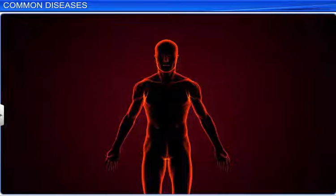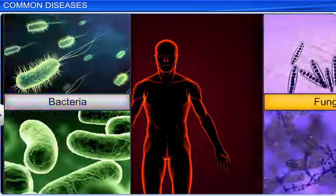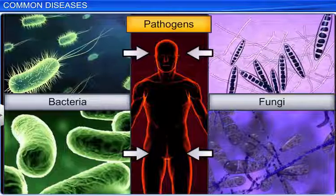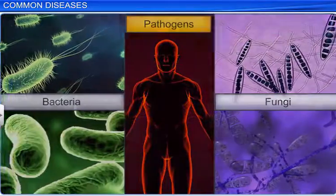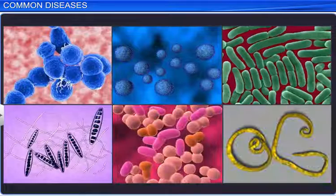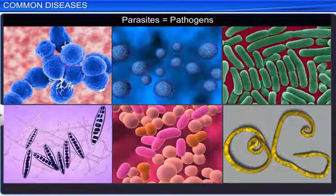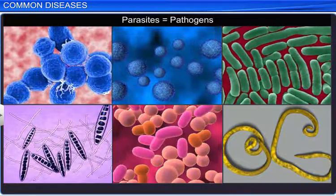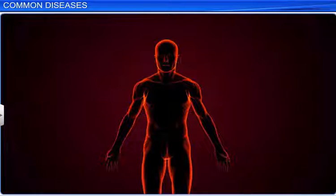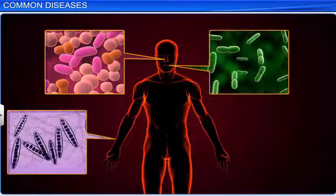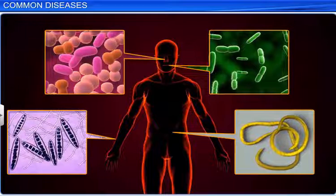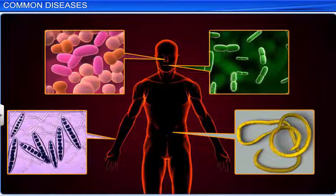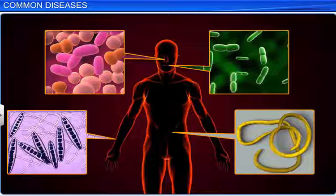Diseases can be caused by a variety of organisms such as bacteria or fungi. All disease-causing organisms are called pathogens. By that definition, all parasites are pathogens since they harm their host by living off them. Pathogens enter our body through various means, adapt to the environment inside the body, and multiply inside. They then interfere with normal bodily functions, causing either morphological or functional damage.